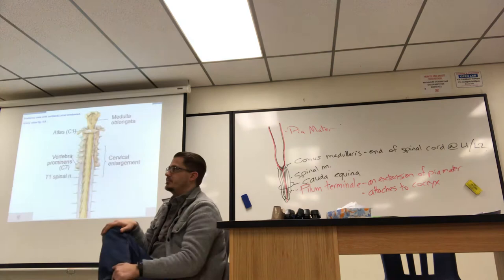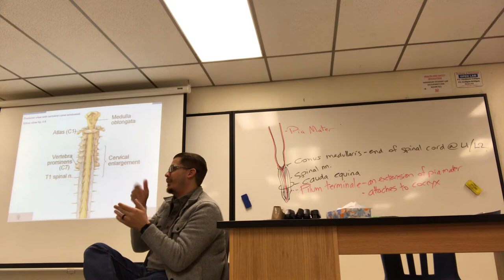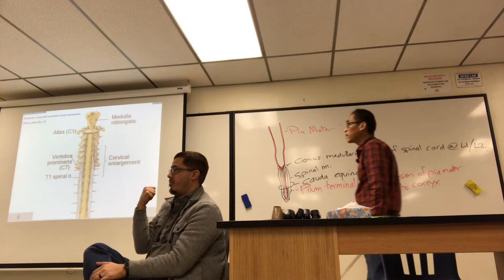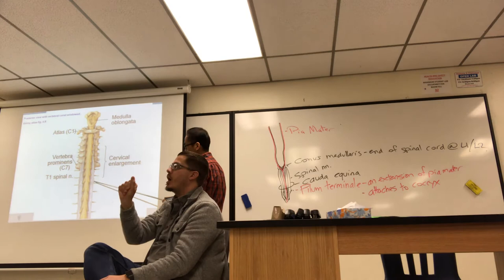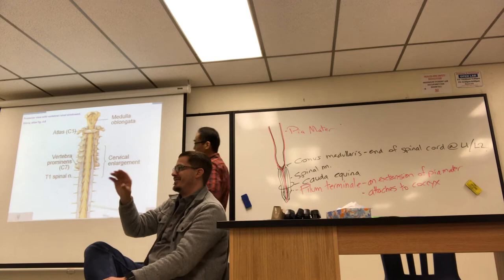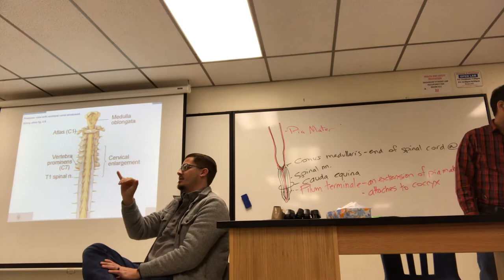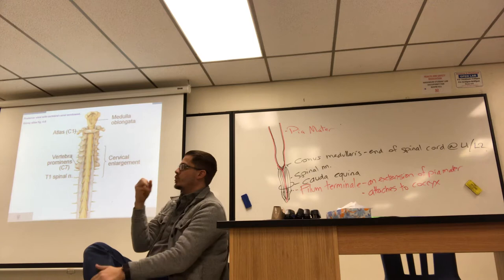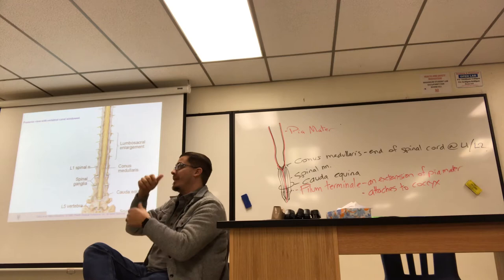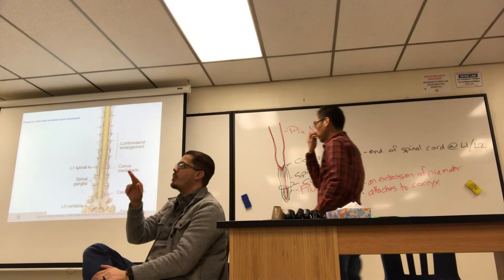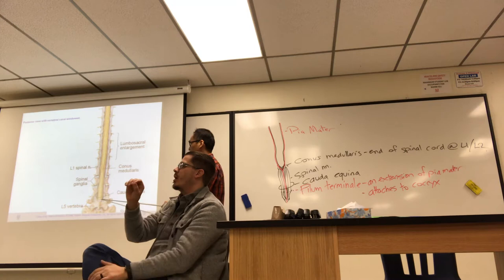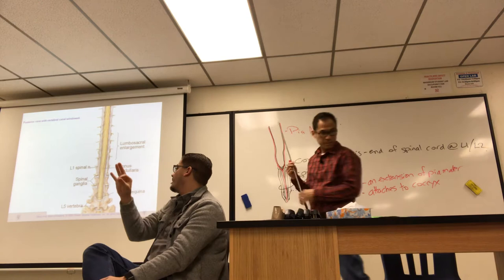Looking at the textbook picture: the dura has been cut open, and at each segmented level you can see a pair of spinal nerves exiting the vertebral column. The superior aspect shows the top of the spinal cord; the inferior view indicates the lumbosacral enlargement and where the conus medullaris would be, as well as the cauda equina. Note that the filum terminale is not labeled in that picture, but you are responsible for knowing it.